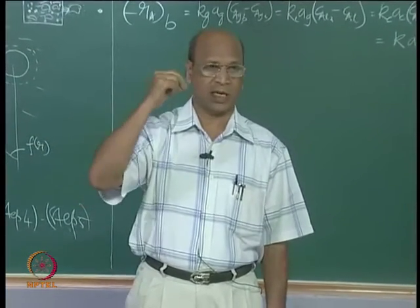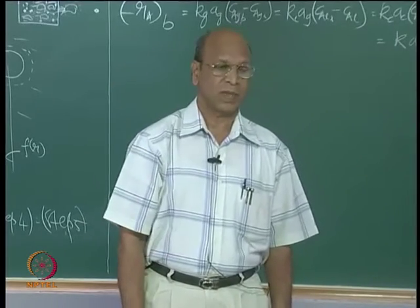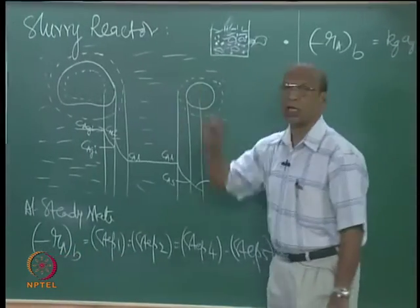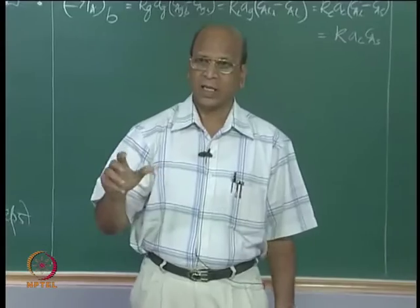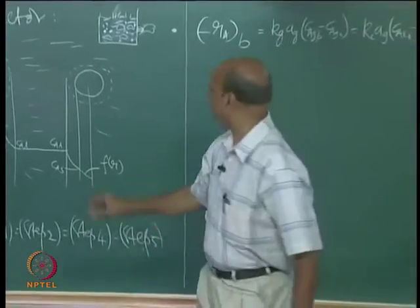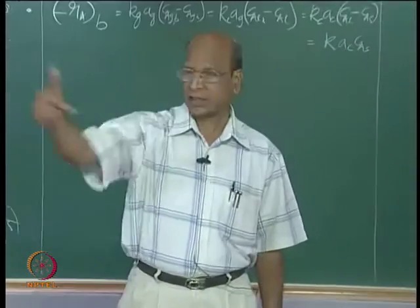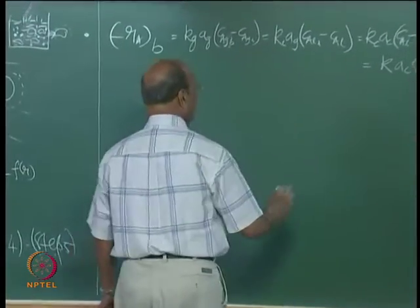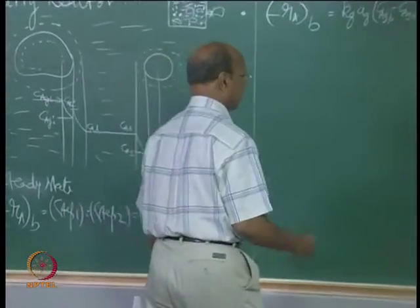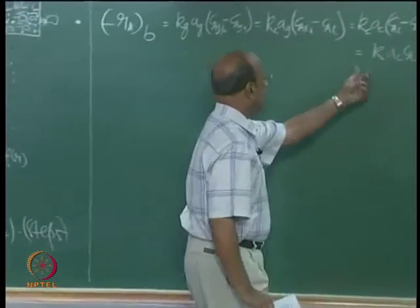For an isothermal reaction, inside the particle you will have less concentration and outside more concentration. That is why the rate based on bulk will be more than the rate based on the concentration profile inside the particle - so you get an effectiveness factor less than 1. We are assuming a non-porous particle, so there is no internal diffusion. Simply it is K times C_AS.